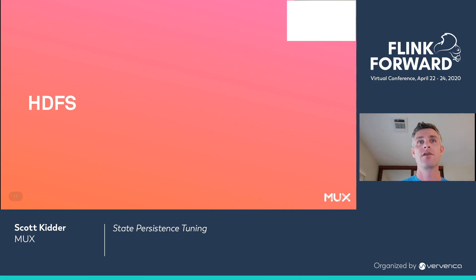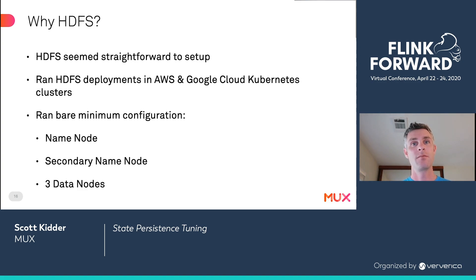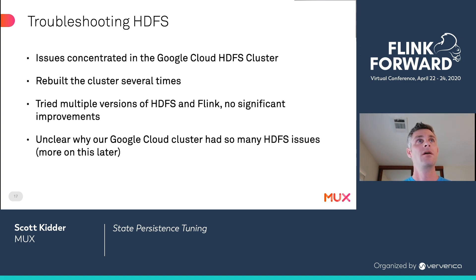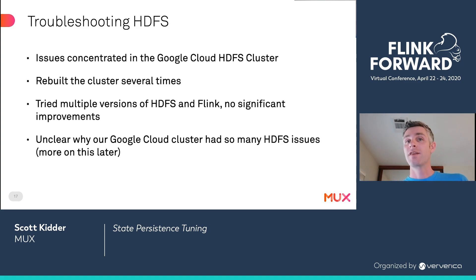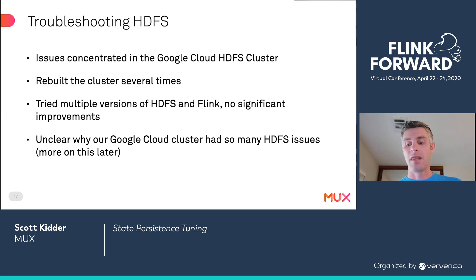HDFS is the first state backend that we used at MUX when we began using Flink. It seemed easy enough to set up — we just created a name node, a secondary name node, and three data nodes to provide redundancy. We ended up having a lot of production issues around HDFS, and most of them were concentrated in our Google Cloud deployment, which seemed really strange since both our Google Cloud and AWS deployments were using the exact same configuration and version of HDFS with the same versions of Flink. The primary difference — which would become obvious later — was the applications we were running in those clusters.